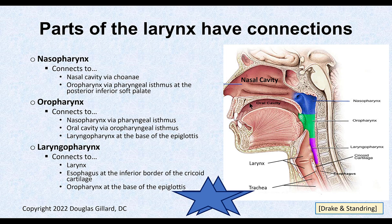The soft palate — the hard palate is the top of the roof of the mouth, and then it forms the soft palate, and the soft palate goes into the uvula. The posterior inferior part of the soft palate is the border between the nasopharynx and the oropharynx. That border has a name — it's called the pharyngeal isthmus. The pharyngeal isthmus is the border between the nasopharynx and the oropharynx.